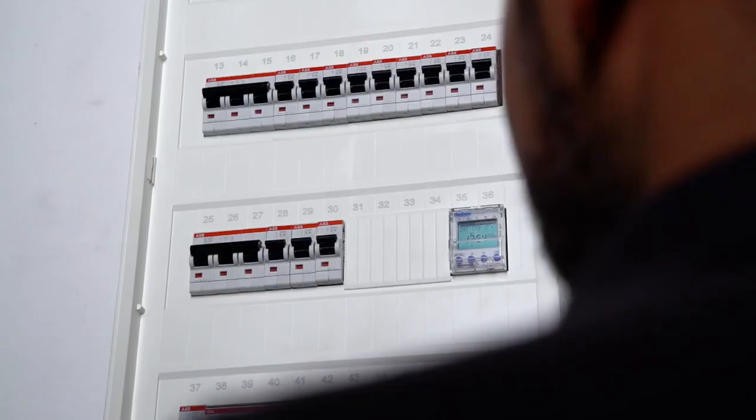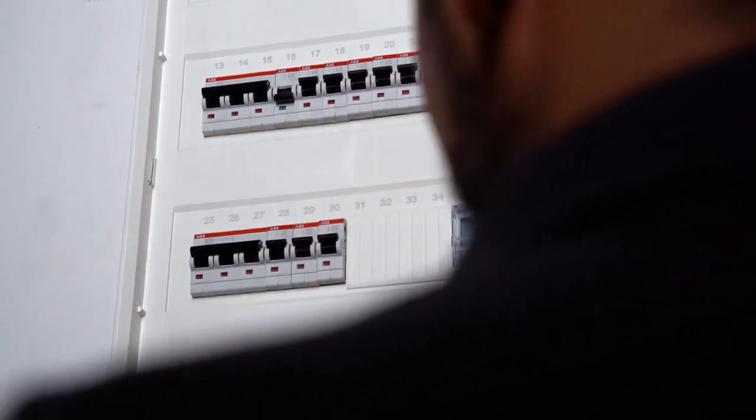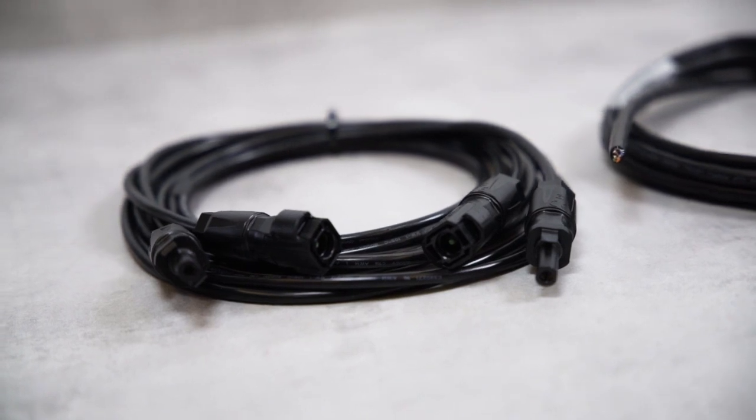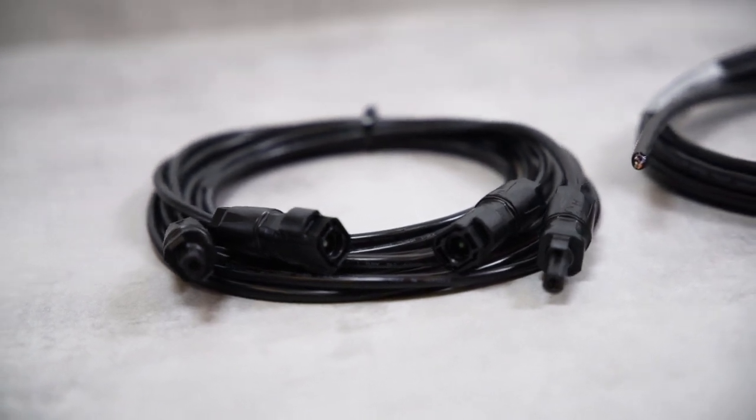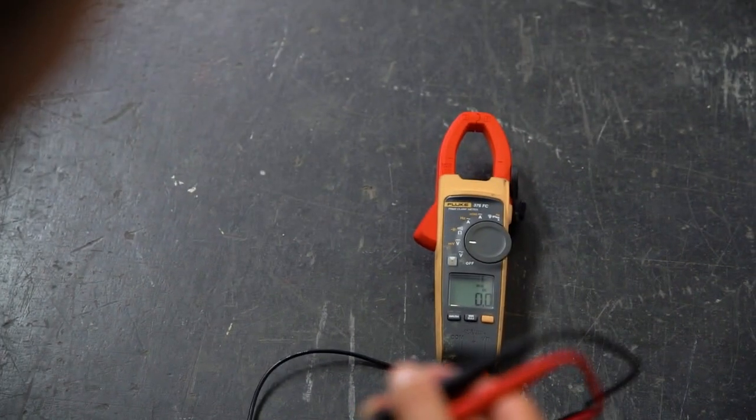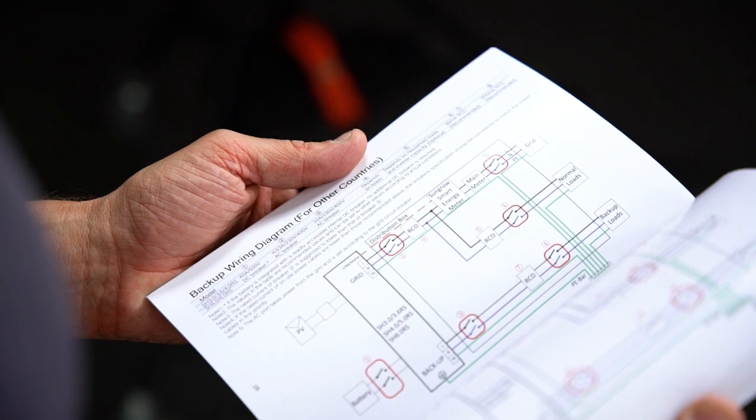Before the inverter can be connected, the AC home circuit breaker must be disconnected, the cables must be de-energized and in perfect condition. Before installation, make sure by measuring that the cables are really voltage free. You will find all cable requirements and wire sizes in our manual.